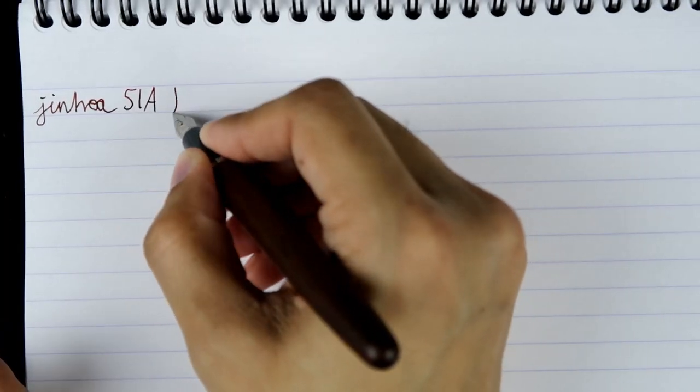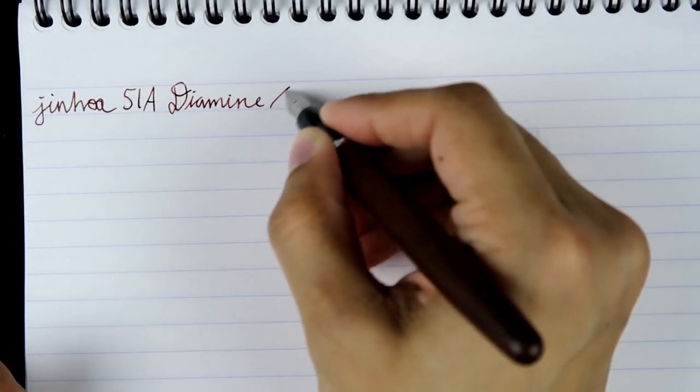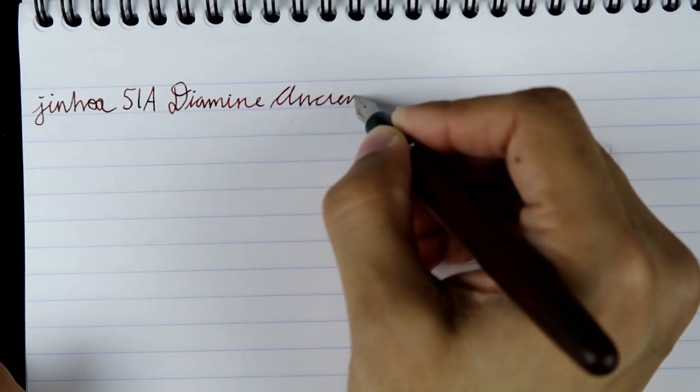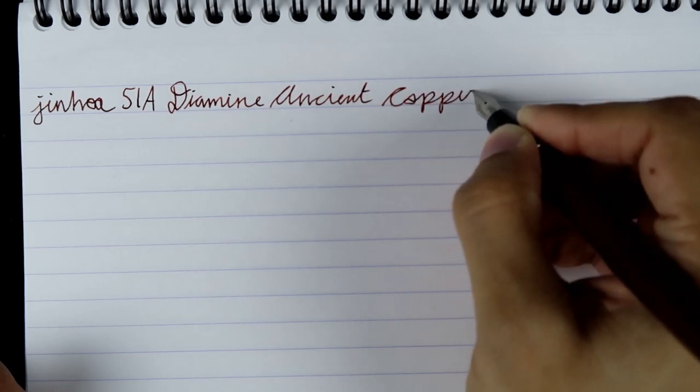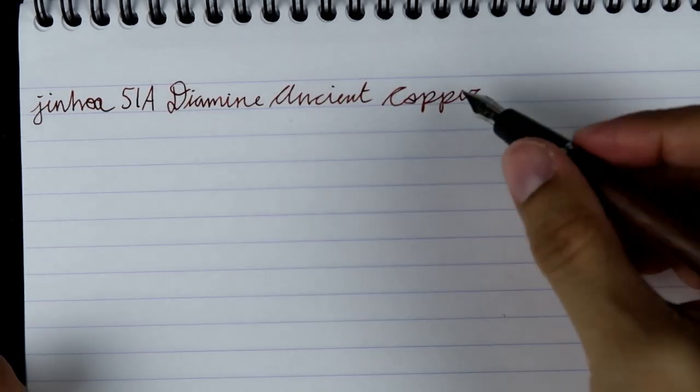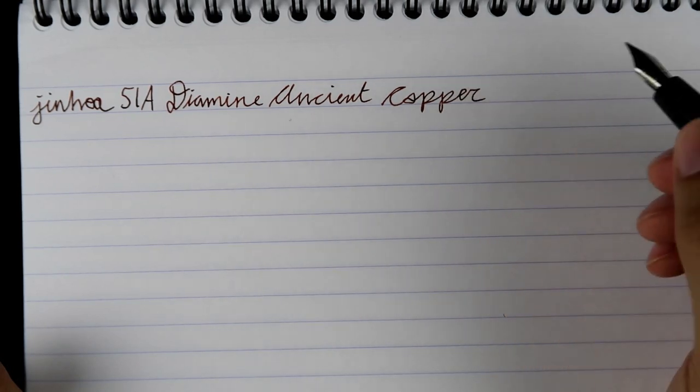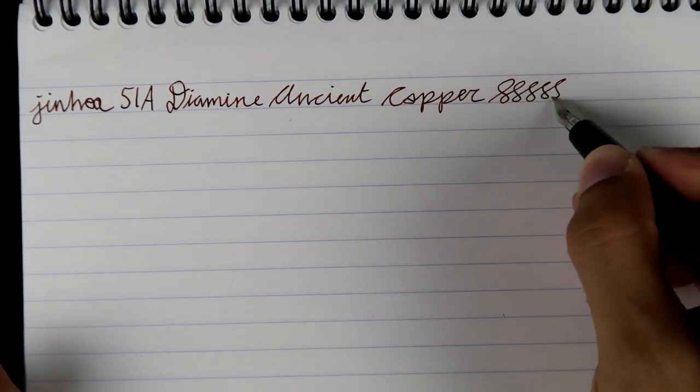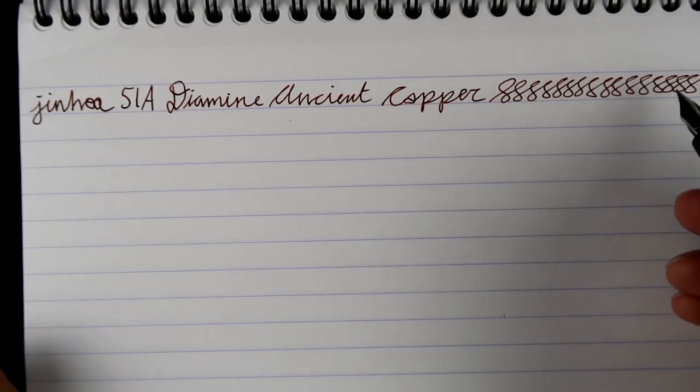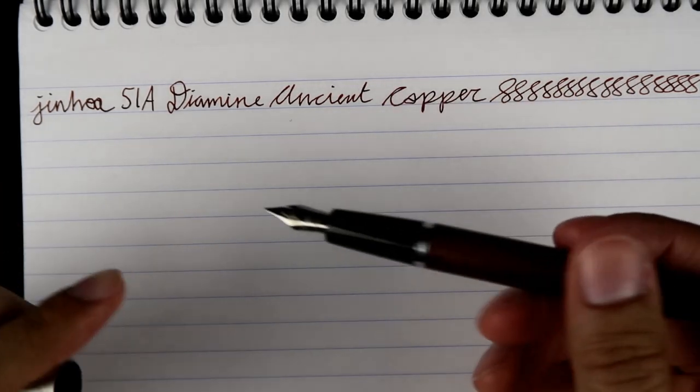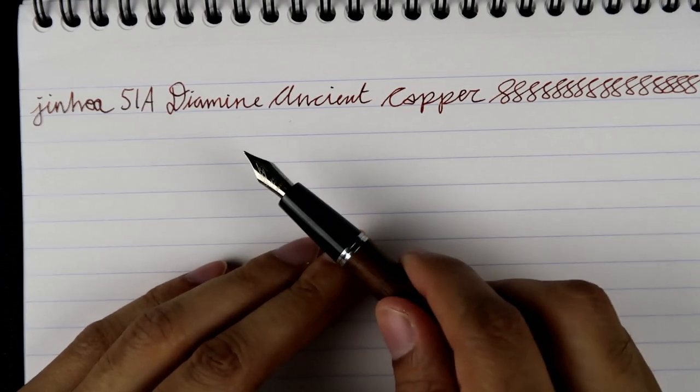Okay, now 51A. It's got the Diamine Ancient Copper. Looks like a nice brown burgundy ink. Closes nicely. It's got nice smoothness, a little bit of toothiness. Feel the roughness a little bit, but overall pretty good pen. It's definitely not the Butter King, but we shall find the Jinhao Butter King today.